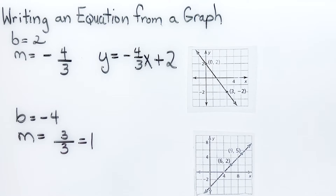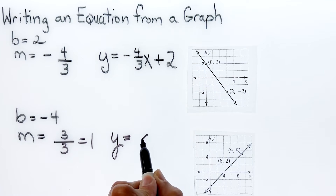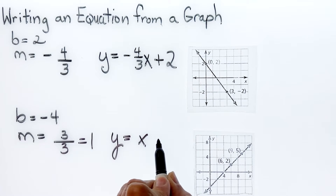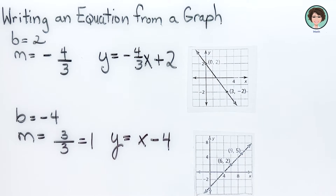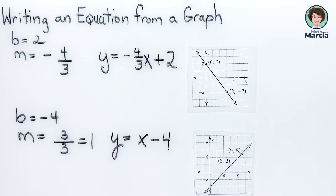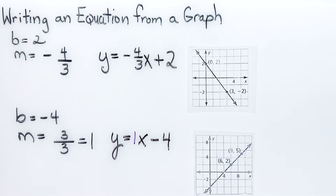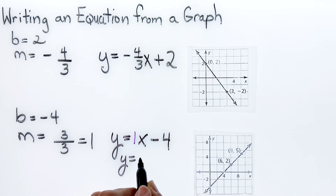The equation for this line would be y equals x minus 4. Remember there's always an understood 1 in front of the x — if you write it that way it would still be right, but the book will represent it as y equals x minus 4.